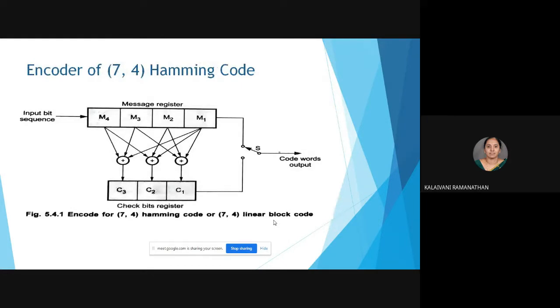The encoder of the Hamming code is drawn based on the relations between message bits and check bits: c3 = m1 ⊕ m3 ⊕ m4; c2 = m1 ⊕ m2 ⊕ m4; c1 = m1 ⊕ m2 ⊕ m3. A switch traverses from the message register to the check bit register so that code words are generated in sequence from both registers, depending on the input bit sequence.